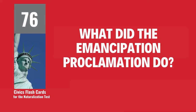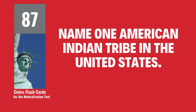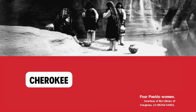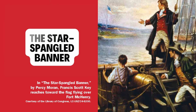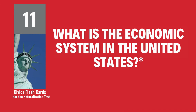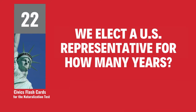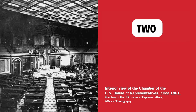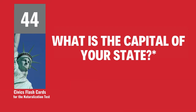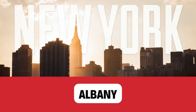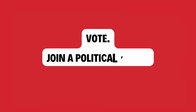What did the Emancipation Proclamation do? Freed the Slaves. Name one American Indian tribe in the United States. Cherokee. What is the name of the National Anthem? The Star-Spangled Banner. What is the economic system in the United States? Capitalist economy. We elect a U.S. representative for how many years? 2. Who signs bills to become laws? The President. What is the capital of your state? Albany. What are two ways that Americans can participate in their democracy? Vote, join a political party.